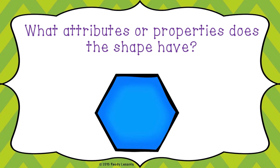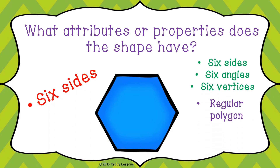How about this one? What properties does this shape have? Come on, you can do it. It has six sides, six angles, six vertices, and this shape is an example of a regular polygon. The name of the shape is hexagon.